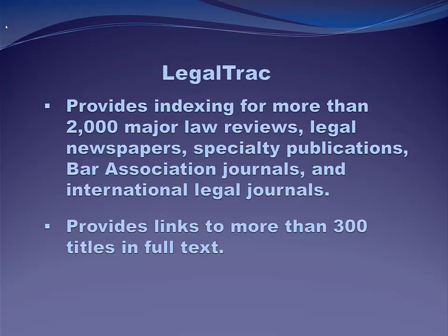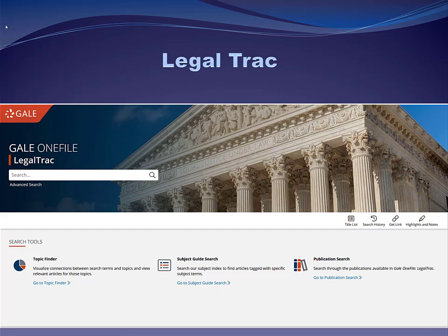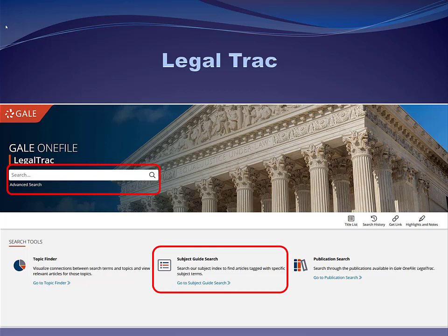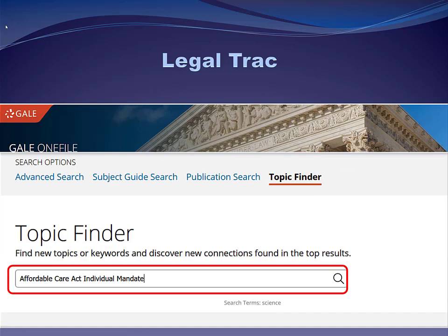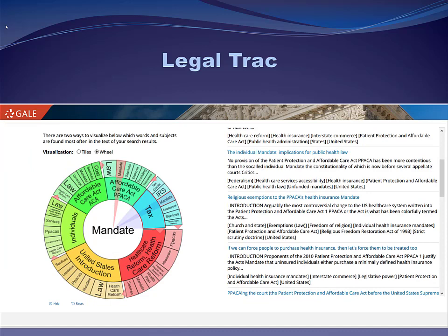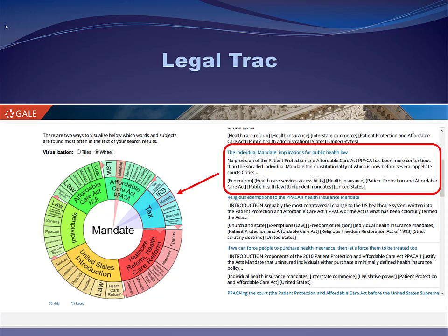LegalTrac provides indexing for more than 2,000 journals and provides more than 300 journals in full text. Here's the LegalTrac landing page. I can choose to search by keyword like I would on Lexis or Westlaw, by subject, or to search a single journal. Here's a unique feature I really like — Topic Finder. I'll search for 'Affordable Care Act Individual Mandate.' LegalTrac gives me a wheel with all sorts of subtopics related to my topic. There are many relevant subtopics I could click on to get articles. Here I choose 'Tax Mandate' — and to the right, LegalTrac gives me articles on that subtopic. Notice that while there are fewer articles than you might find on Westlaw or Lexis, they are all highly relevant — fewer articles to go through, but all of high quality.